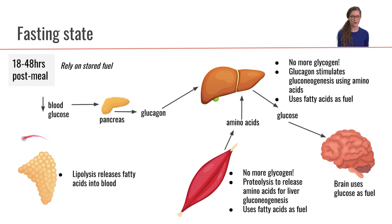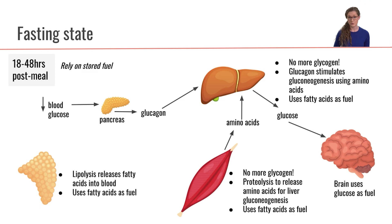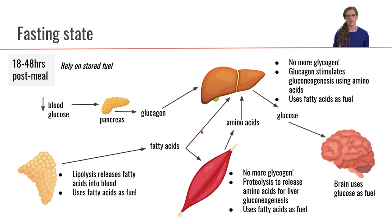The adipose tissue is going to be performing lipolysis — breaking off fatty acids from its triglycerides, the storage form — and releasing those fatty acids into the bloodstream. The adipose tissue will also be using fatty acids as its own fuel. These fatty acids released from the adipose tissue will be used as fuel by both the liver and the muscle.